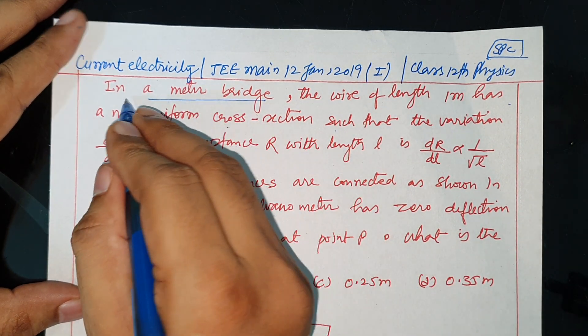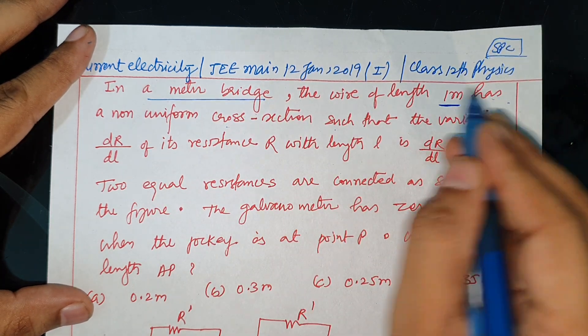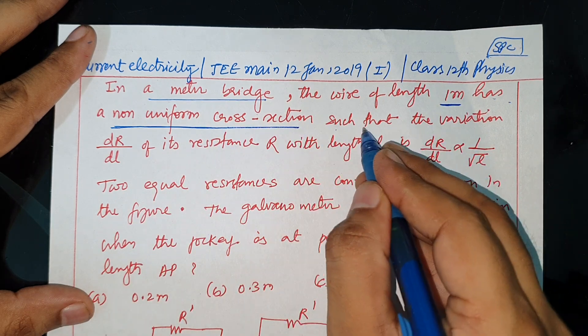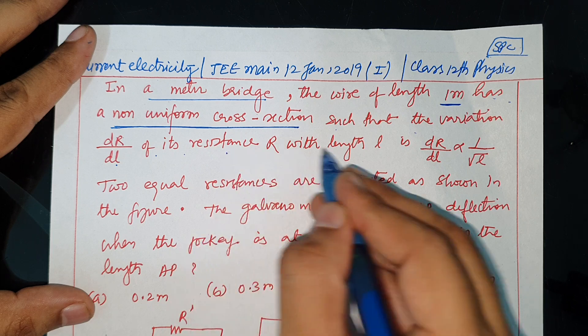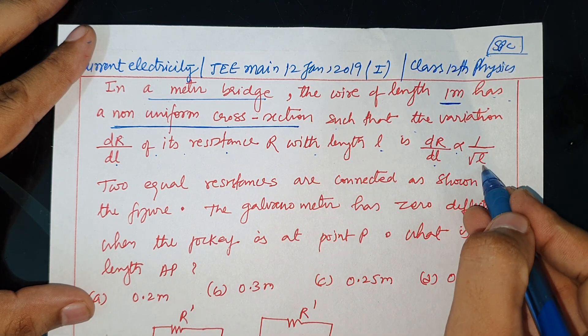Current lecture is a question. In a meter bridge, the wire of length 1 meter has non-uniform cross-section - this is an important point here. Such that the variation dR/dL of its resistance R with length L is dR/dL proportional to 1 upon root L.